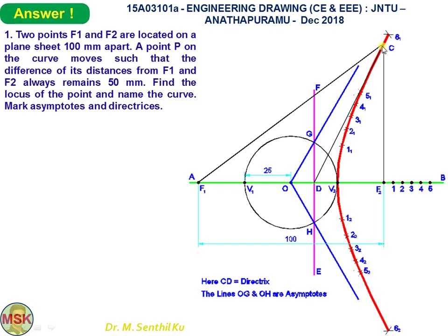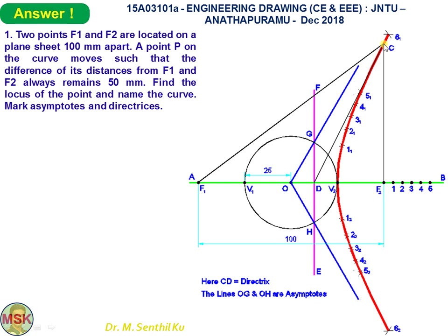Through F2 draw a vertical line; it cuts the curve at point C. Draw a line joining C and F1, then bisect the angle F1-C-F2. You will get the line CD, which is the bisector of angle F1-C-F2. The bisector cuts line AB at point D. The line CD is nothing but the directrix. Following the same on the bottom side gives the other directrix.